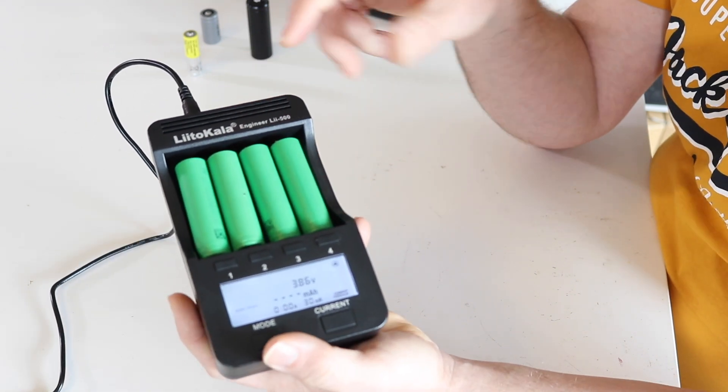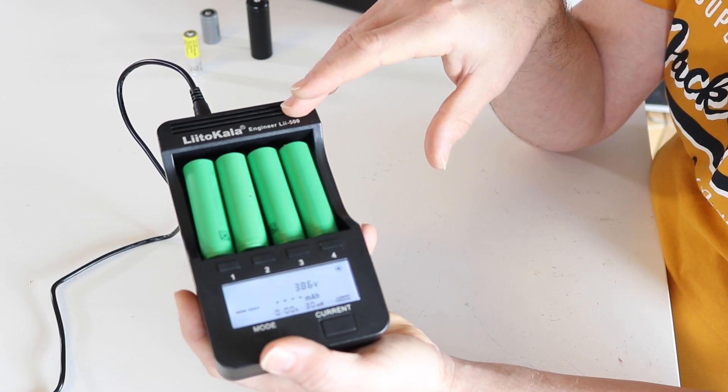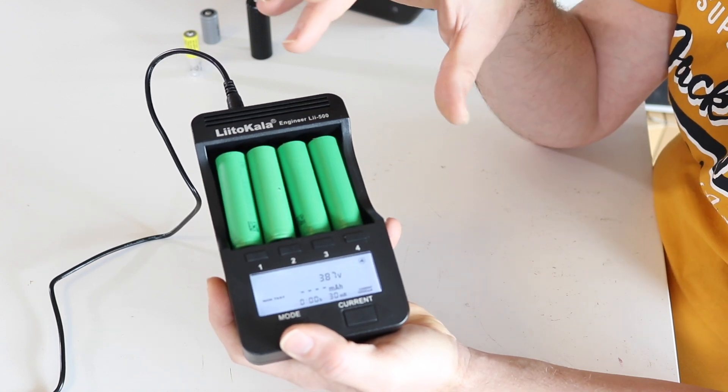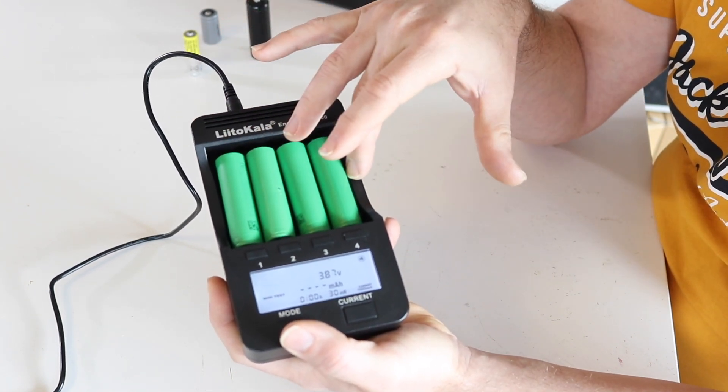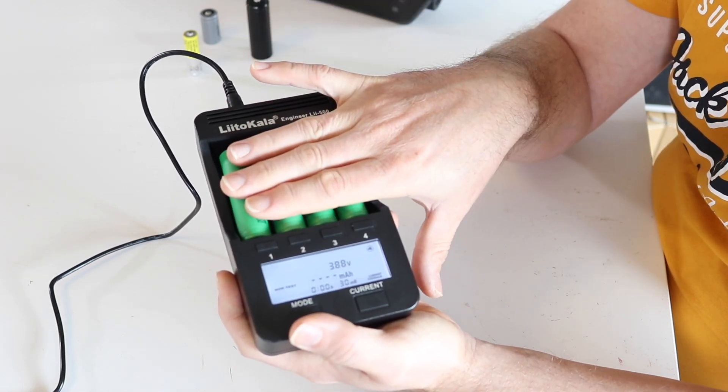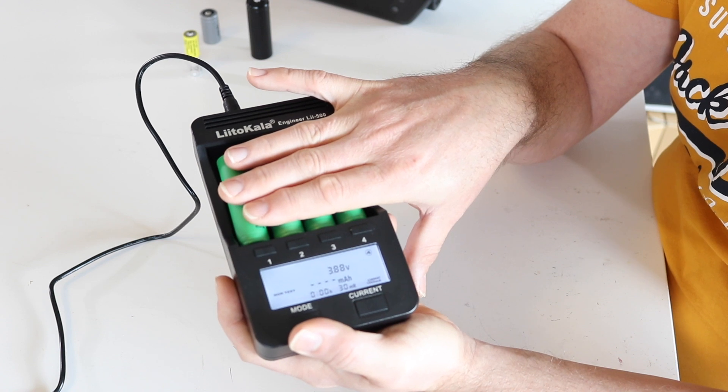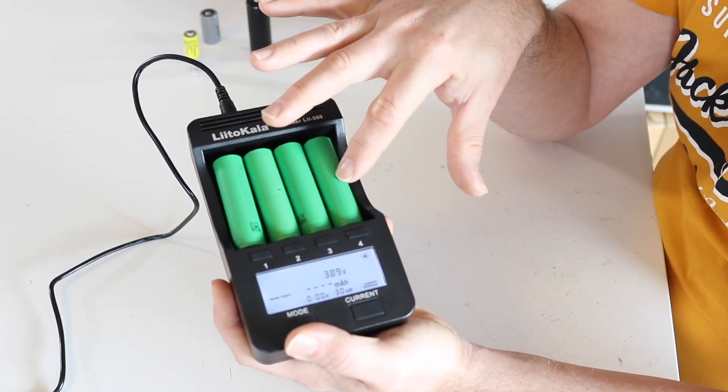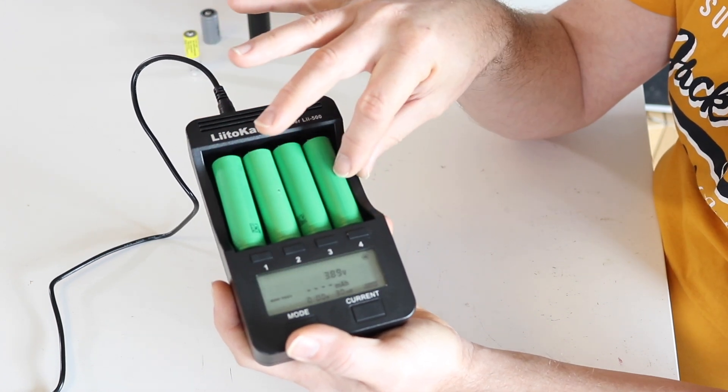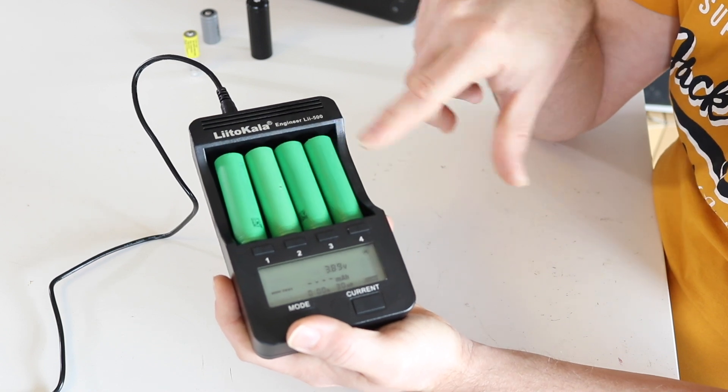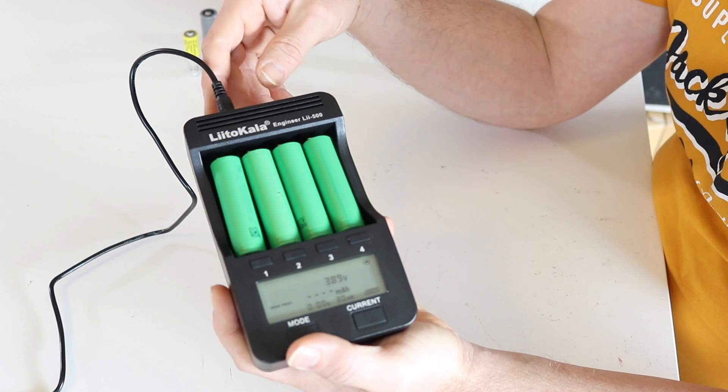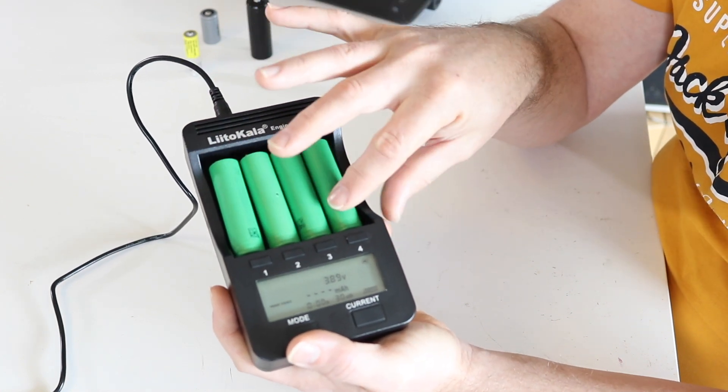The problem what this charger has, and what the Opus did not have—the Opus had the capability of putting four cells in there and then giving them the same program at the same time. This is not working once the cells are inside, or you have to put the cells inside all together and then you have eight seconds to program them all in one.